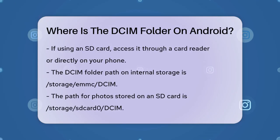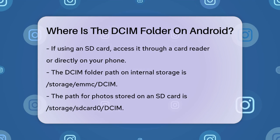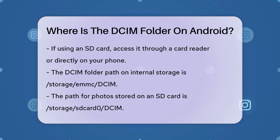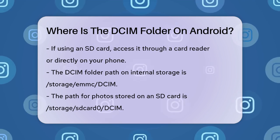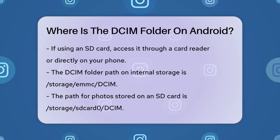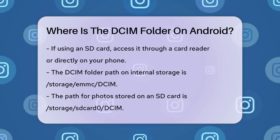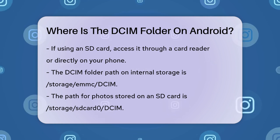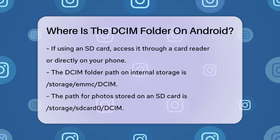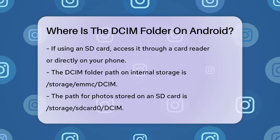If the photos are stored on an SD card, the path is /storage/sdcard/dcim. To access these folders on your phone, it's helpful to use a file manager app like ES Explorer or Total Commander. These apps make it easier to navigate through your phone's files and folders.